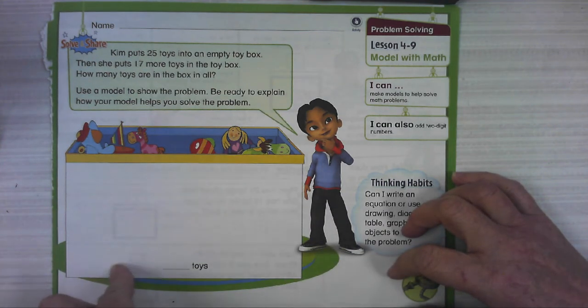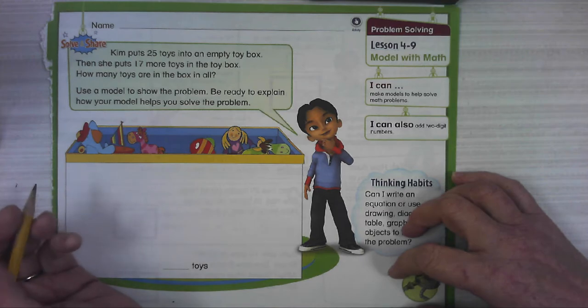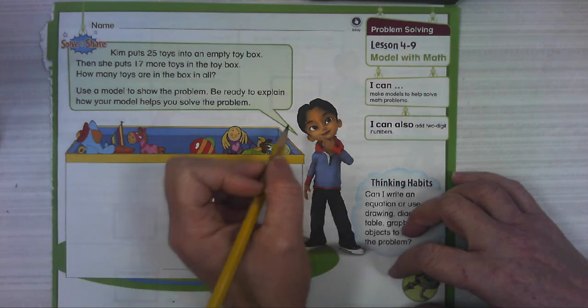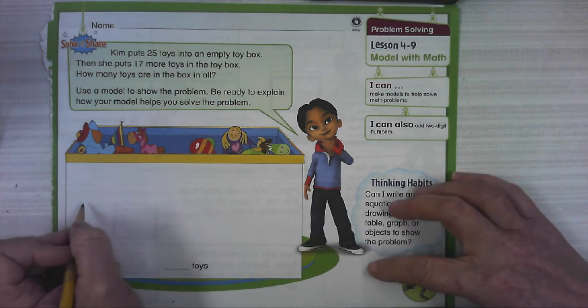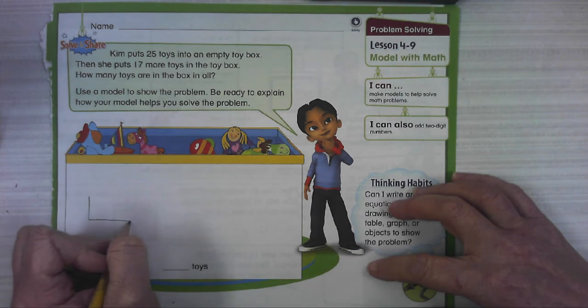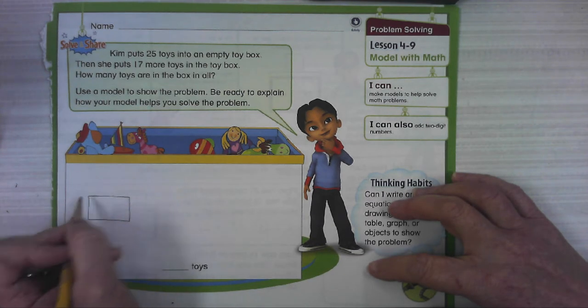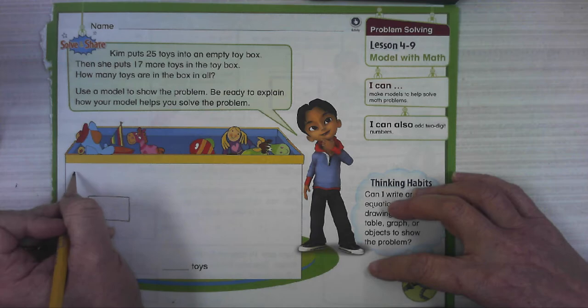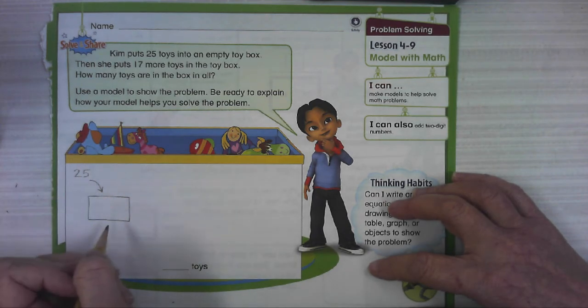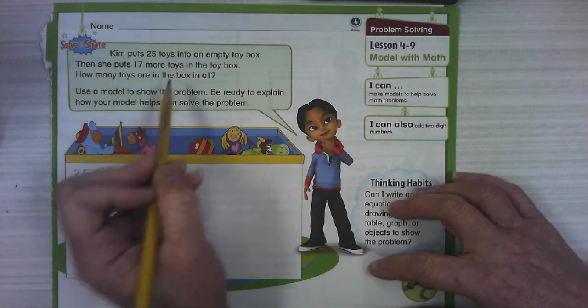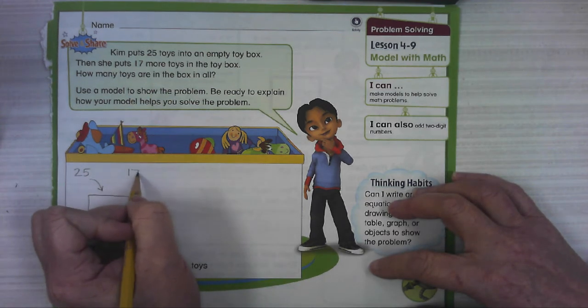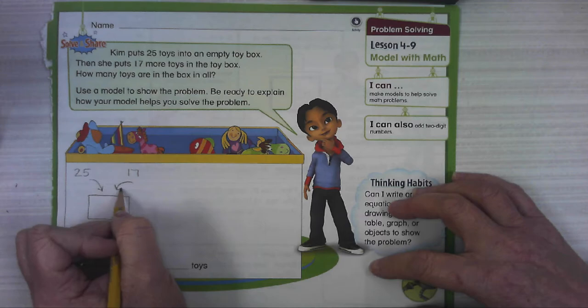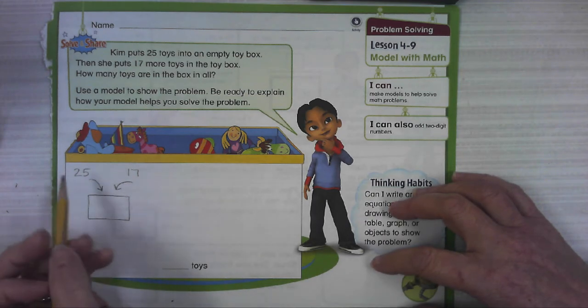So here we see a big old box. So we're starting out putting 25 toys in there. I'm gonna draw a box. 25 toys go into the box and then 17 more toys go into the box. How much is this? How many toys are gonna be in the box?